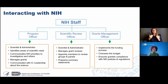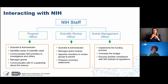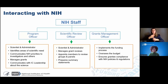We'll start off with some tips on how to engage with individuals from NIH — who do you talk to and when. There are three different groups: your program officer, your scientific review officer, and your grants management officer. Your program officer identifies areas of scientific need and priority, communicates NIH priorities to investigators, and relays information back to IC leadership about the state of science. The scientific review officer manages grant reviews, appoints members to review panels, and prepares summary statements. Grants management officers deal with budgets, oversee them, and ensure grantees are compliant with NIH policies and regulations.